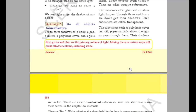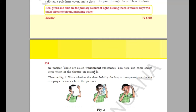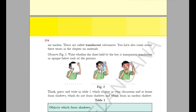The third type is translucent — substances such as polythene cover or oily paper, through which only some amount of light passes, giving an unclear shadow. So opaque blocks light, transparent allows light through, and translucent allows only partial light through. Looking at this picture with the boy, the first example is an opaque object, the second is transparent, and the third is translucent.